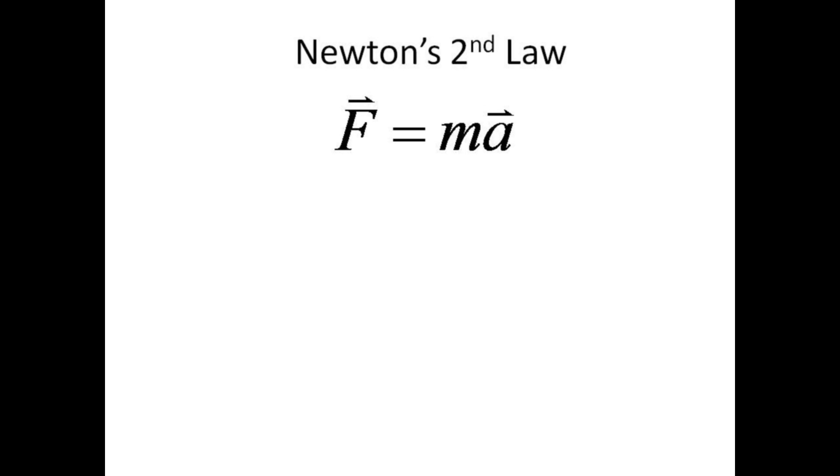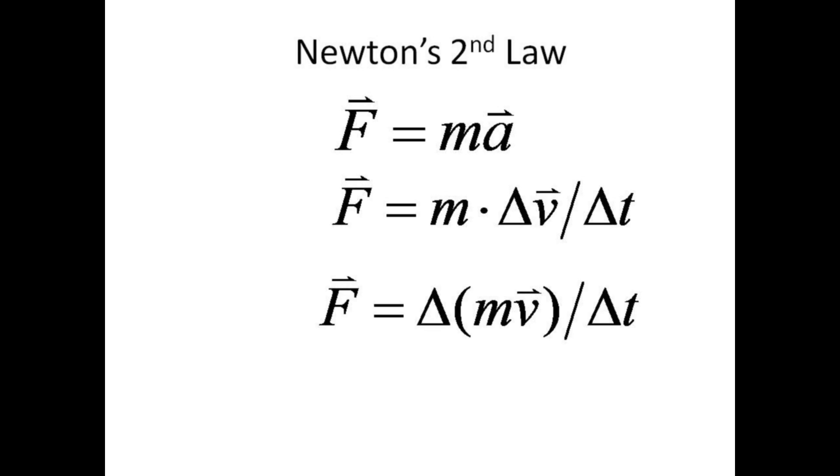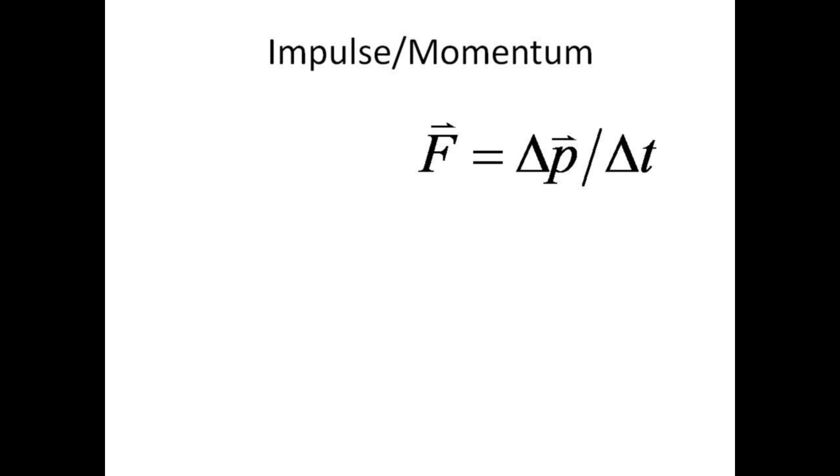The usual way to write Newton's second law of motion is F equals ma, but there is another way. Substitute delta v over delta t for the acceleration, move the mass m into the delta, and we have F equals delta p over delta t. Thus, force equals rate of change of momentum.